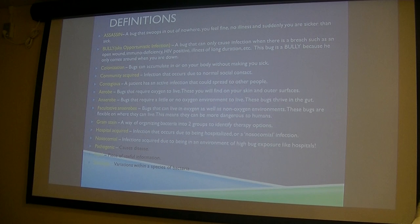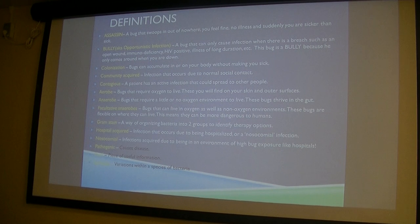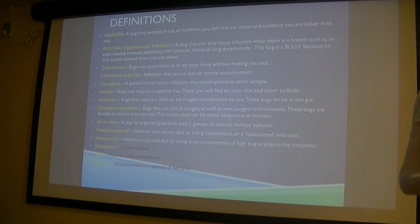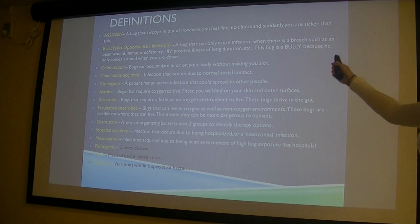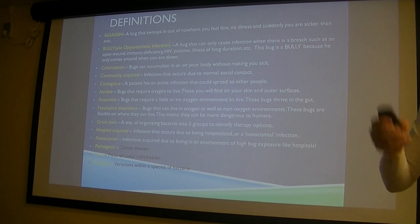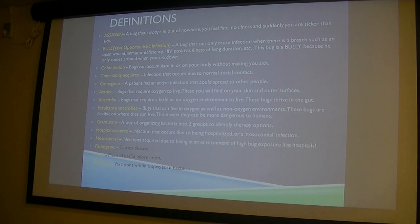I can send this slide out where it makes more sense. In school I learned to categorize bacteria using a couple of terms I've interpreted: 'assassin' is a bug that will just come in and knock you down — you could be healthy one day and on your knees the next. A 'bully' is an opportunistic infection; you already have to be sick and it just comes along and kicks you. We also need to talk about colonization — bugs that live on our bodies but don't actually make you sick.